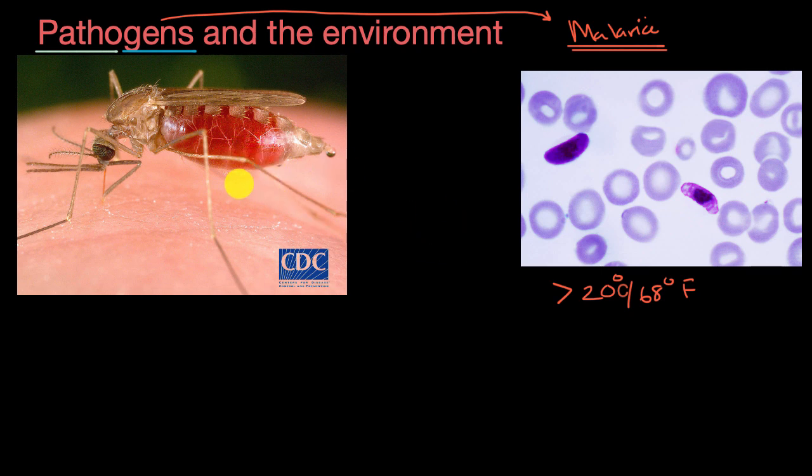And so you need an environment where both mosquitoes can thrive, and there's a lot of human hosts whose blood they can drink, and where they can spread the malaria pathogen from one host to another.